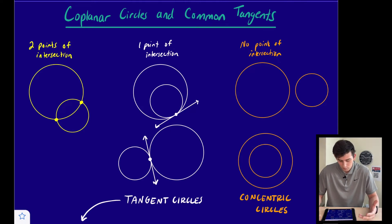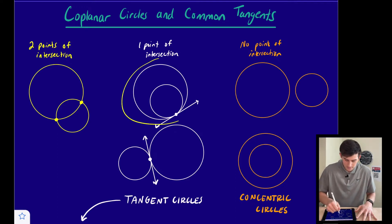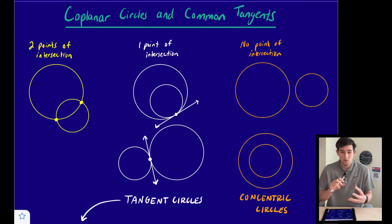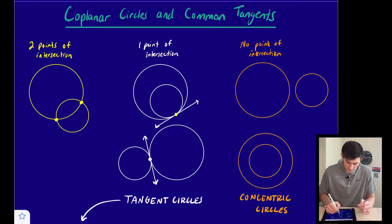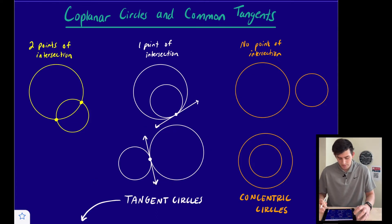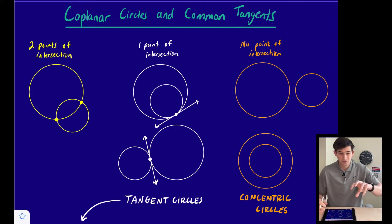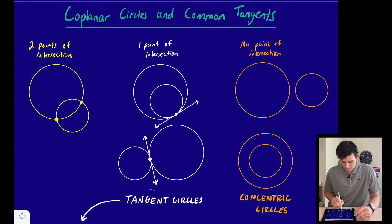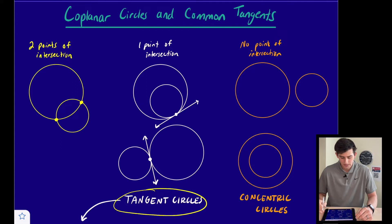Next, we could have one point of intersection, and this could look two different ways. We could have one circle inside of another with a point of tangency where the two circles intersect, or we could have a diagram where the two circles still intersect at one point of tangency but one circle is outside of the other. We would call these tangent circles, because this line here would be our tangent line.